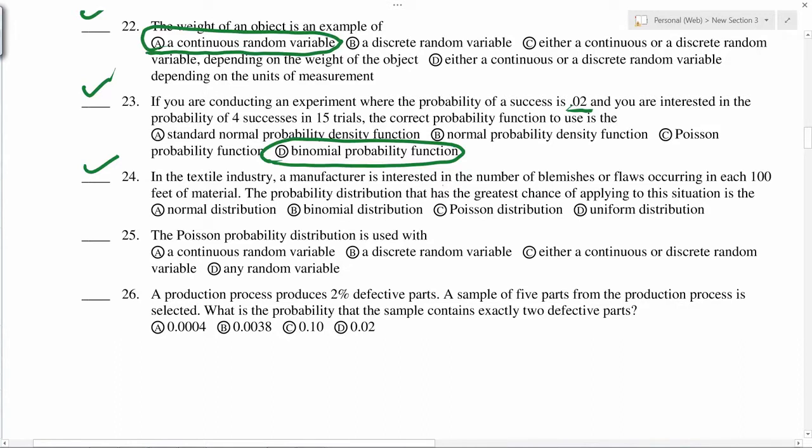In textile industry, manufacturer is interested in number of blemishes of flaws occurring in each 100 feet of material. This is Poisson distribution. Poisson probability distribution is used with a discrete random variable, so binomial and Poisson are discrete random variables.